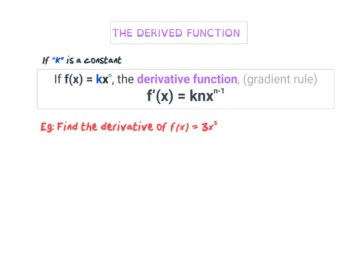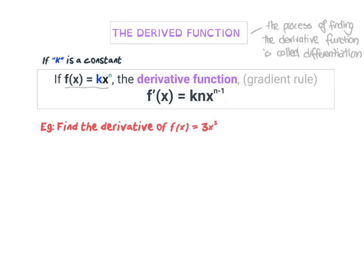So let's look at ways to find the rule for the gradient. If k is a constant — so k will be a number like 3 or 2 — and you have x to the power of something, we can find the derivative of this formula f(x). This symbol here represents the derivative function: f(x) is the original function and f'(x) is the derivative. You find it by multiplying k times n, where n is the power, then putting x and reducing the power by 1.